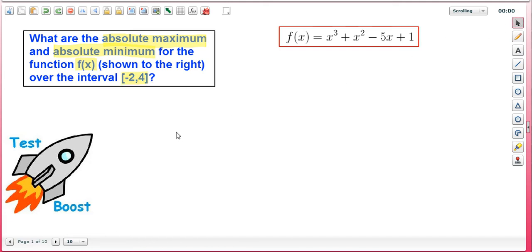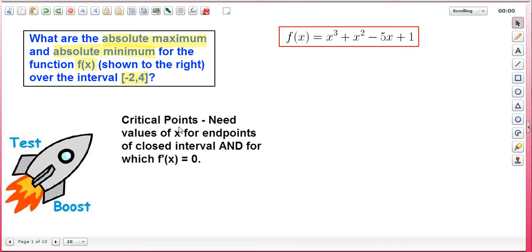Now to answer this question, we have to first get all the critical points over this interval. The critical points are the values of x at the endpoints, so negative 2 and 4, and the critical points also are the values of x for which f prime of x is equal to 0.